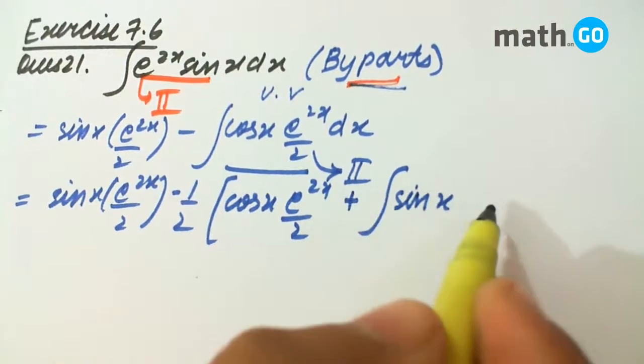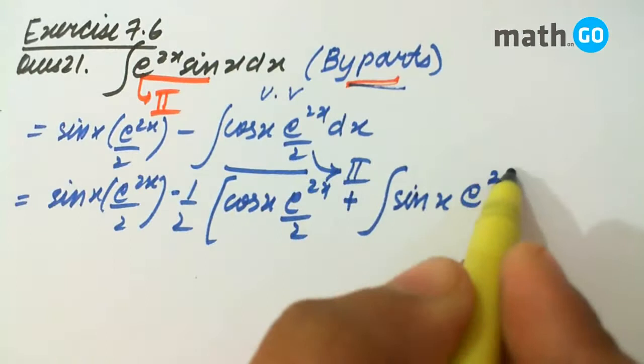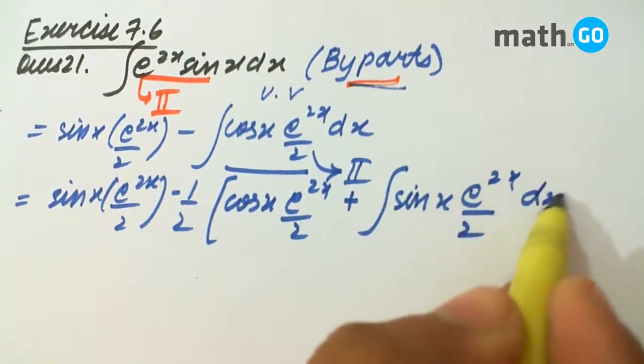That is minus sin x, so this becomes plus, and integral of e to the power 2x by 2 dx.